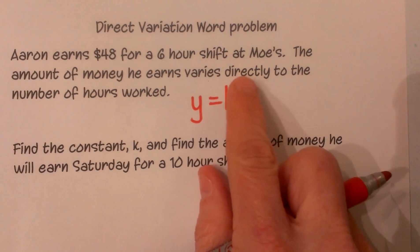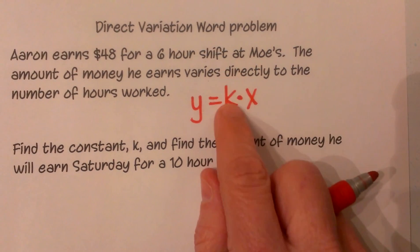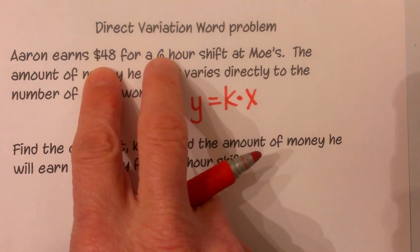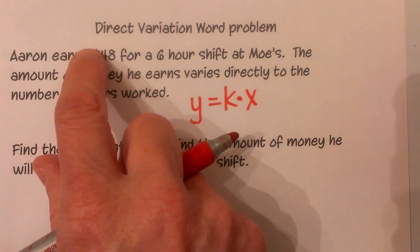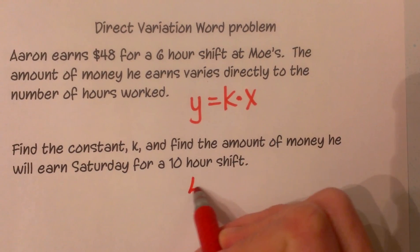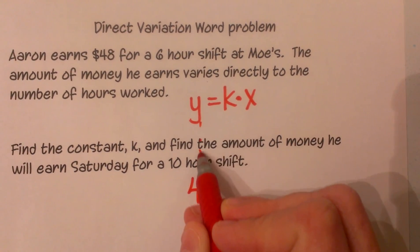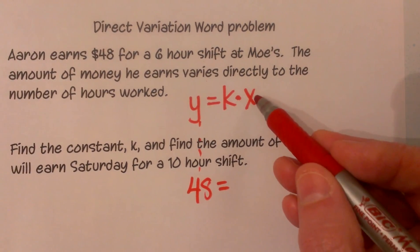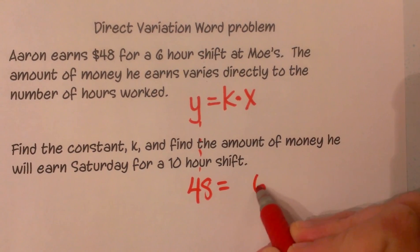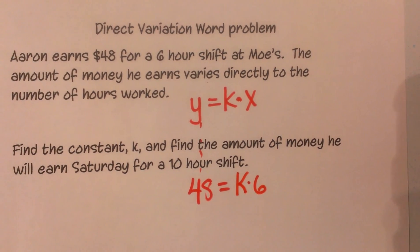Now what we have to do is figure out what our constant is given this situation. Well, since y depends on x, I am going to put 48 in for my y value and I am going to put my hours worked in for my x value, and k is my constant I have to solve for.